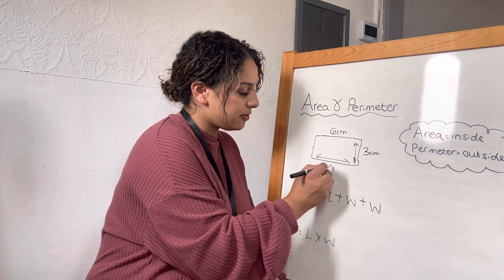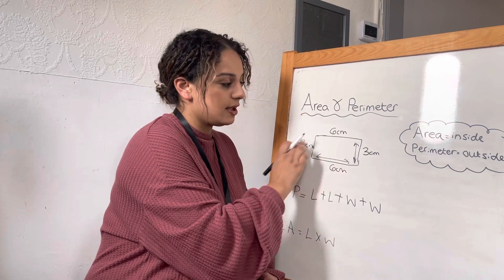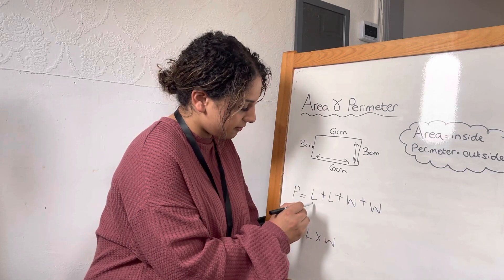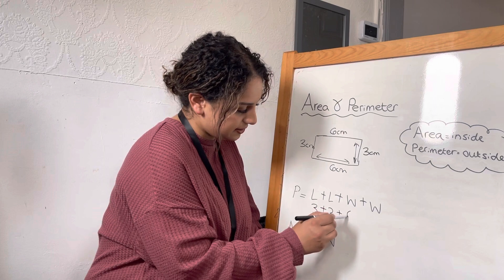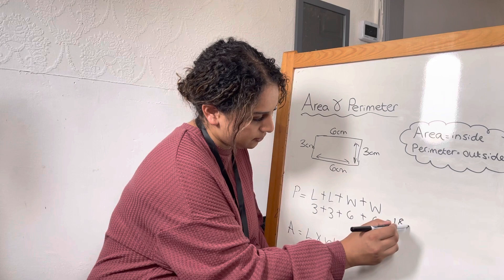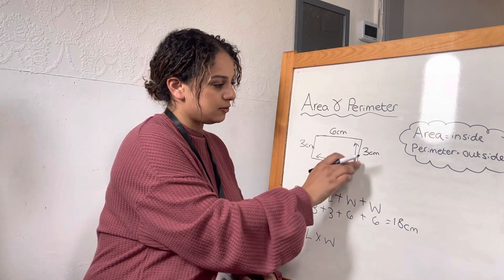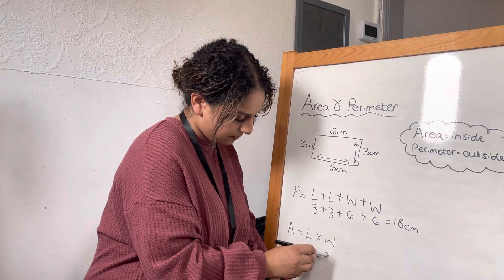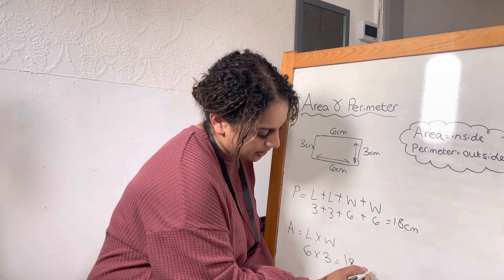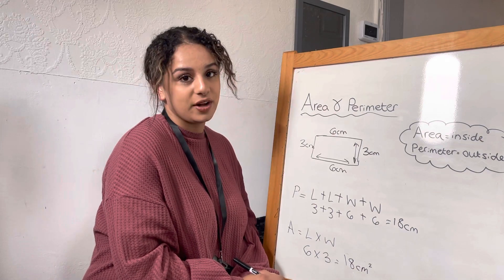Your measurements for this one will be six and three. Now, remember that the opposite sides should also be six and three because it is a rectangle and opposite sides are the same. For your perimeter, you should have three plus three plus six plus six, which gives you 18 centimeters. For your area, you should have six times three — and this is one of those occasions where both answers are the same — you should have 18 centimeters squared. If you did get that, well done!